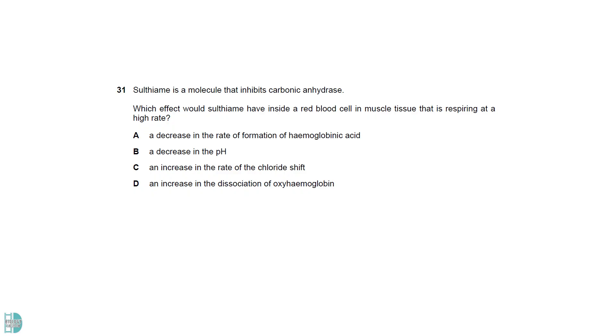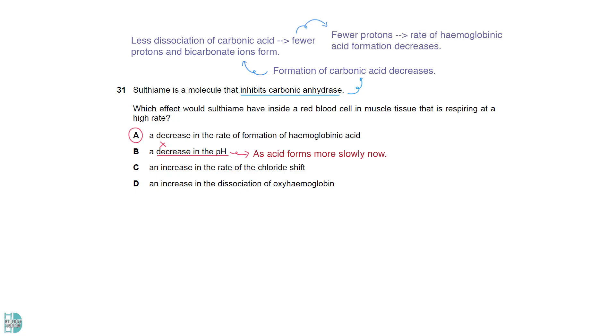If carbonic anhydrase is inhibited, there will be a decrease in the formation of carbonic acid. Since the formation of this acid is slower, pH should not decrease. Less dissociation of carbonic acid results in fewer protons and bicarbonate ions being formed. Fewer protons cause a decrease in the rate of formation of haemoglobin acid. A lower concentration of bicarbonate ions should decrease chloride shift as the compensation of charge changes is less required.